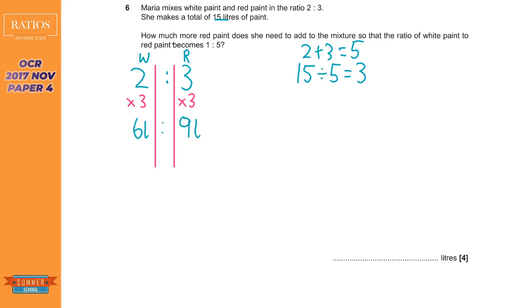So we have six liters of white paint and nine liters of red paint. We're not interested in the red paint for now, because looking at the next part of the question: how much more red paint does she need to add so that the ratio of white paint to red paint becomes one to five?